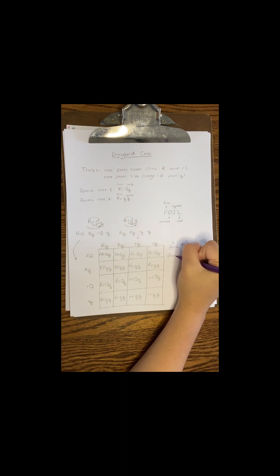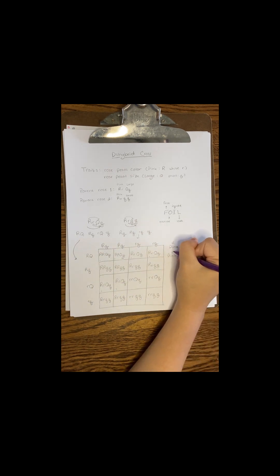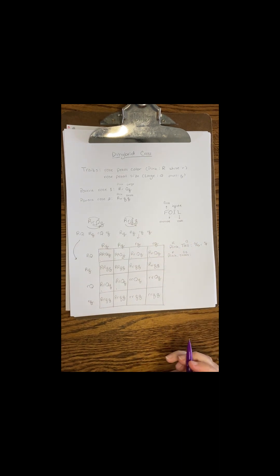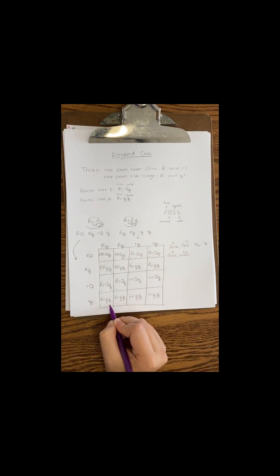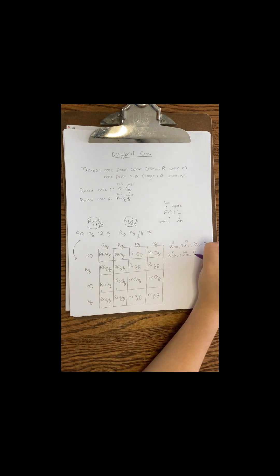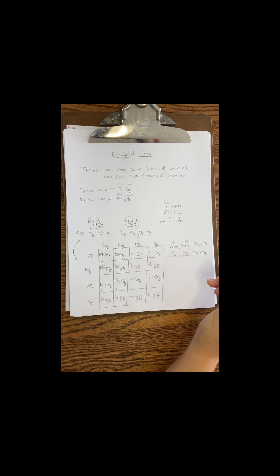Now let's do pink petals that are small. So we'll be looking for boxes with at least one capital R, but two lowercase q's, since a small petal is a recessive trait. Once again, I count 6 out of 16 boxes with this combination, which reduces to 3 eighths.